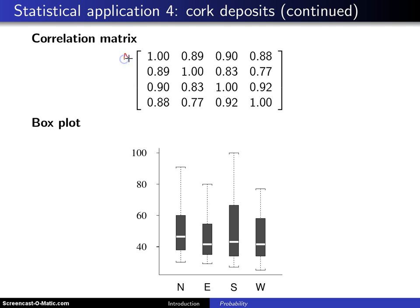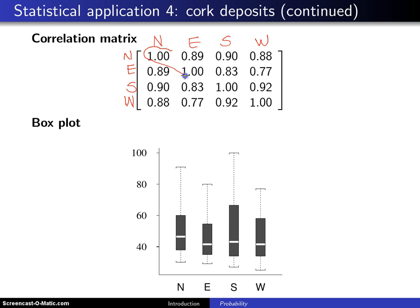If you go to the next slide you will see something known as a correlation matrix. Let me go ahead and put labels on the rows and on the columns: north, east, south, and west — the same labels appear on both axes. There is a perfect correlation on the diagonal, and that will always be the case for all correlation matrices.